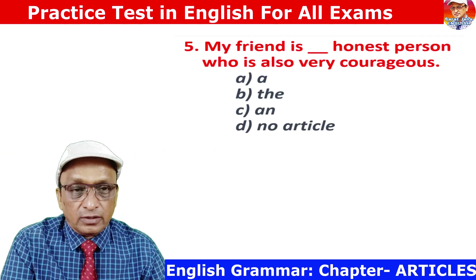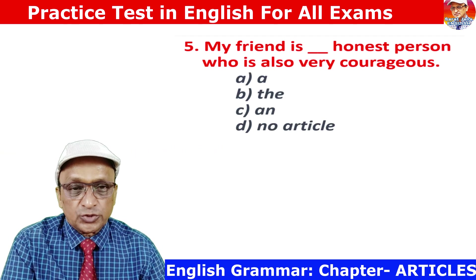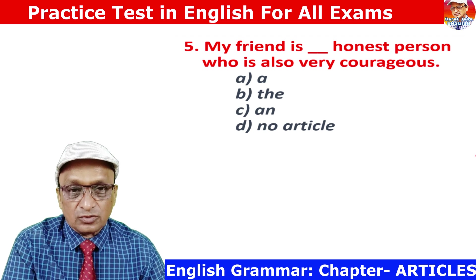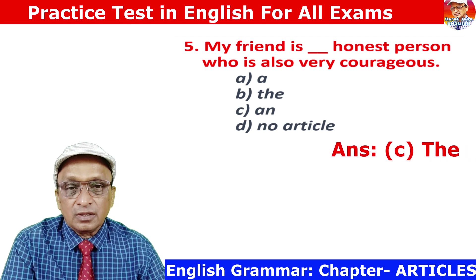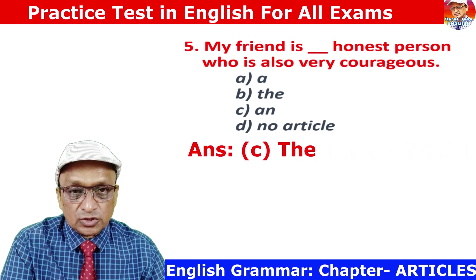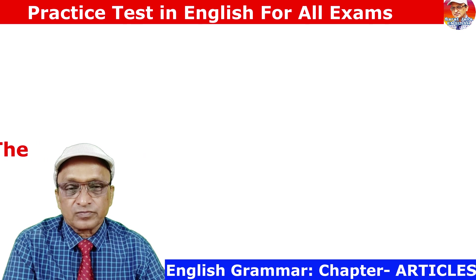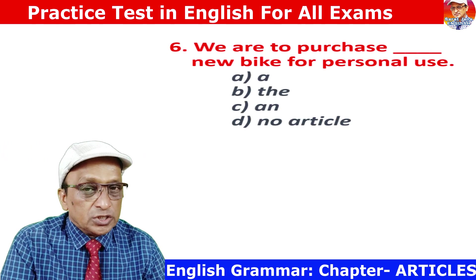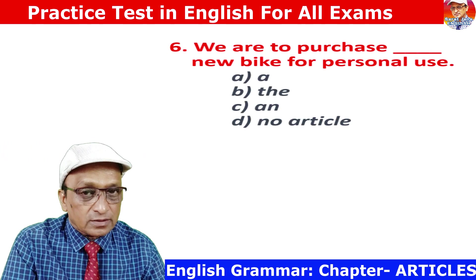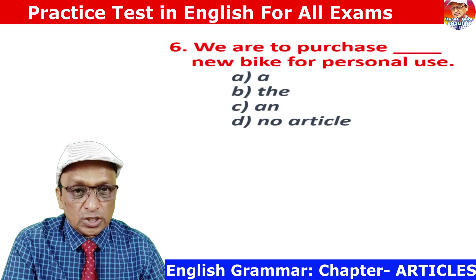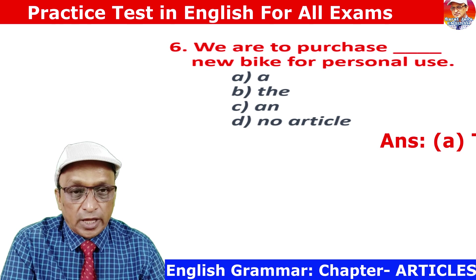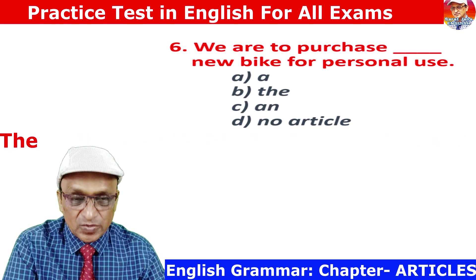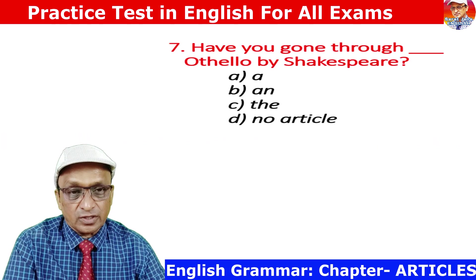Question 5: My friend is an honest person. 'Honest' gives a vowel sound, that is why 'an honest person.' The correct answer is A. Question 6: We have to purchase a new bike. 'New' gives a consonant sound, that is why 'a new bike.' Answer is option A.